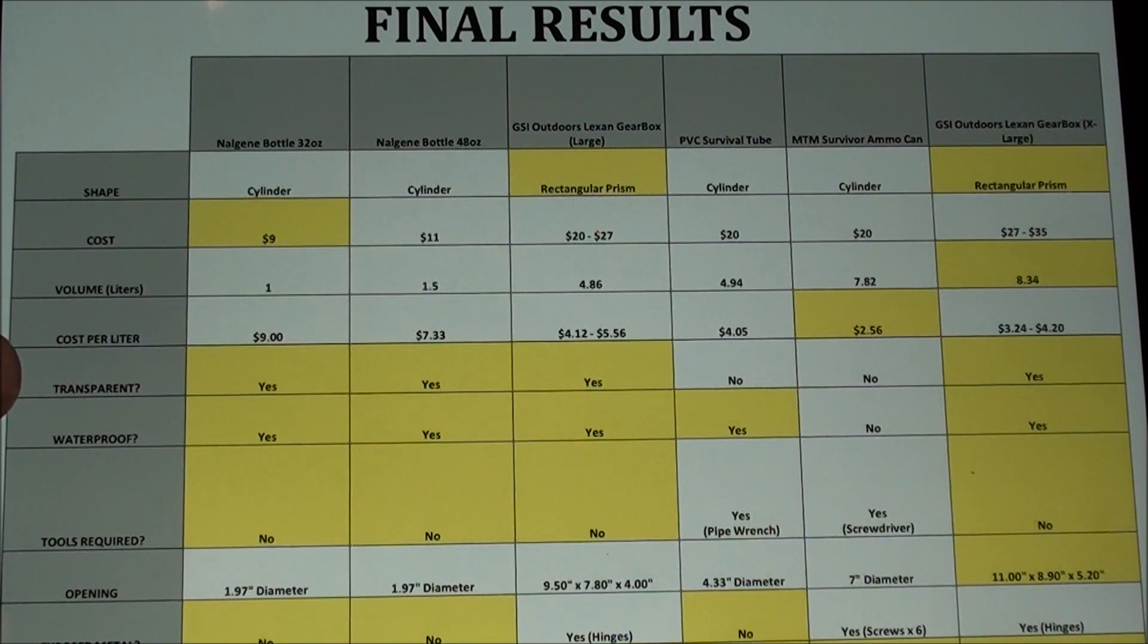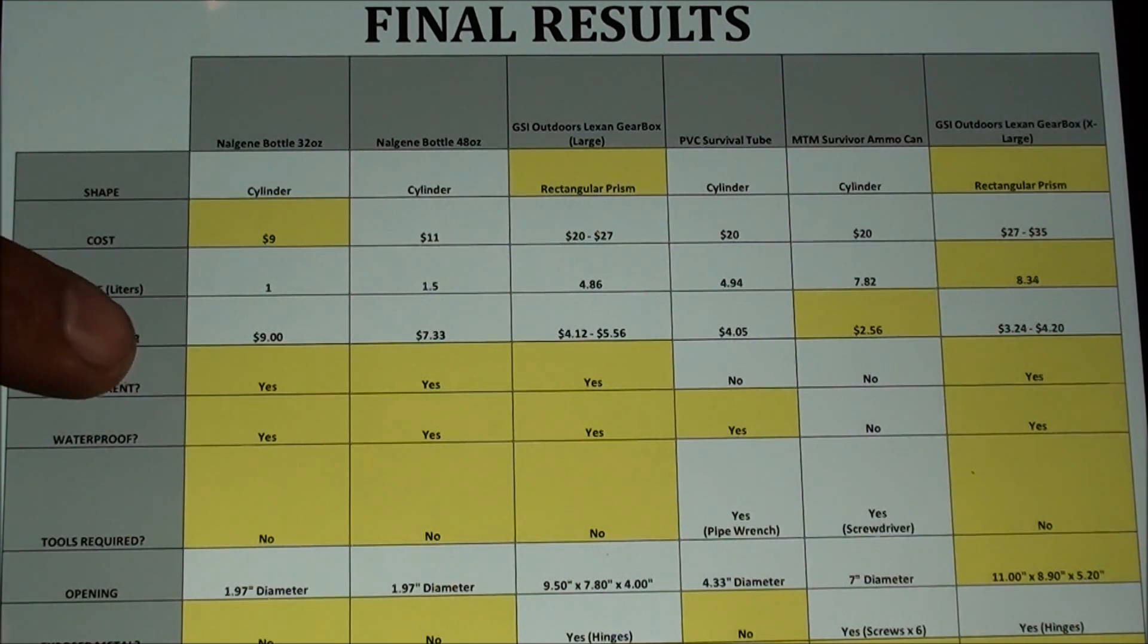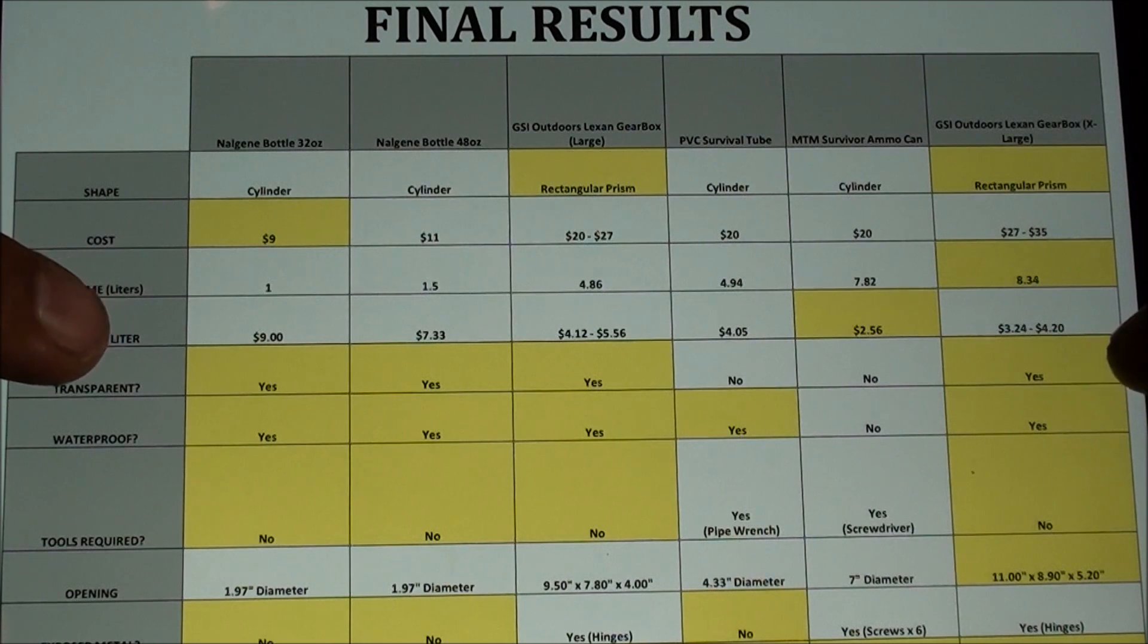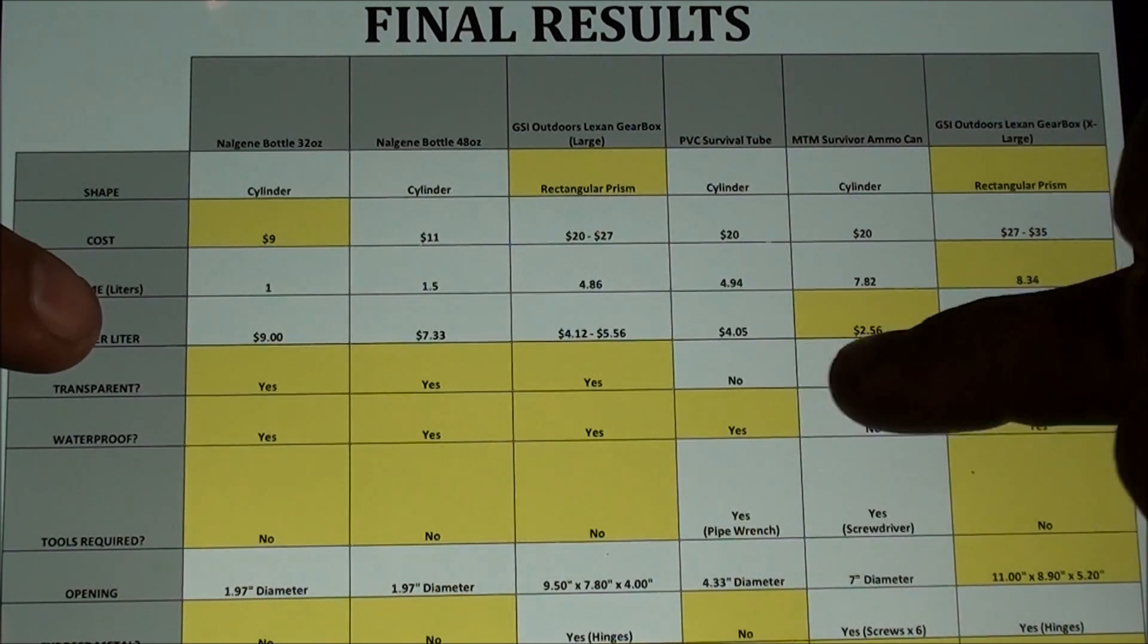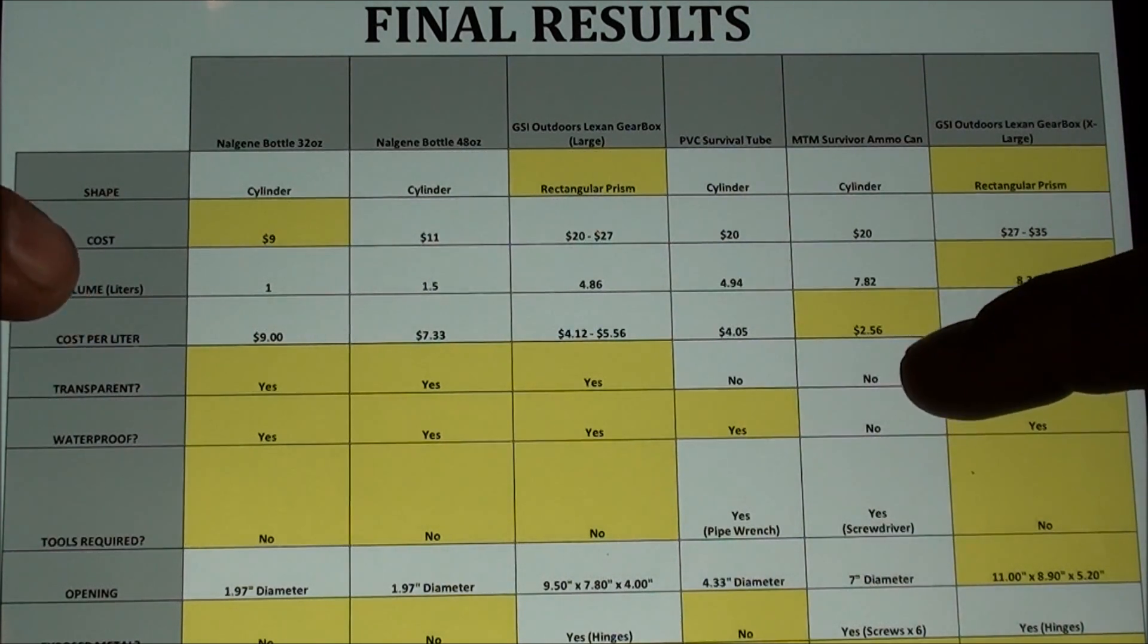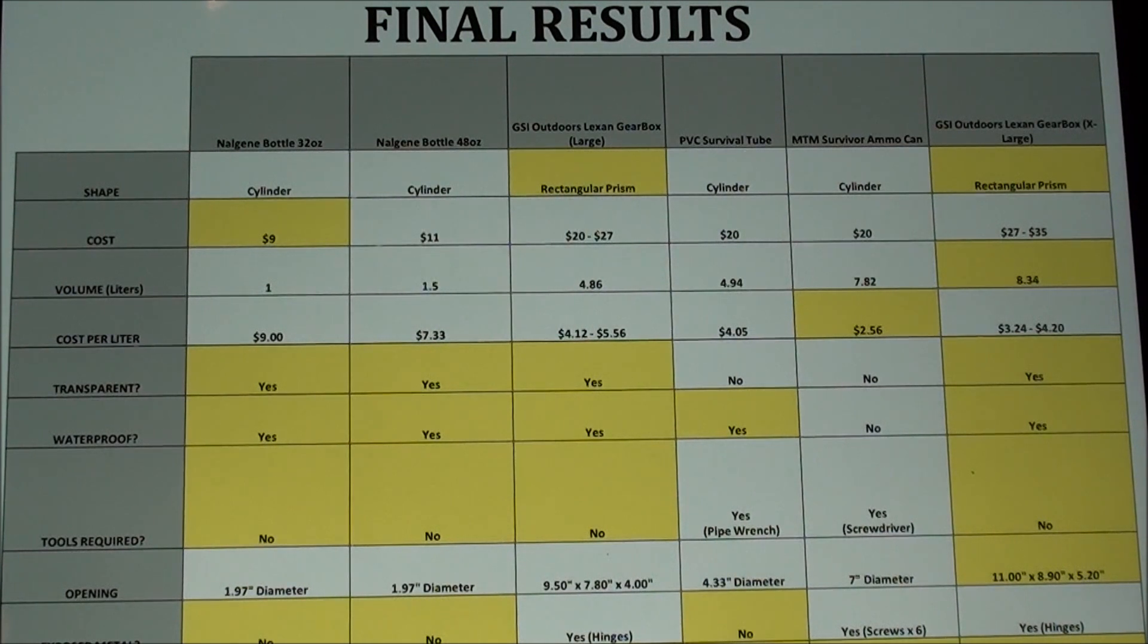The next category is transparency. I find that having a survival cache container, I think it's important to be transparent because if anyone were to happen to find it and not know what the items were inside of it, you could have some potential legal problems with regard to that. So the Nalgene water bottles and the GSI gearboxes are all transparent. The PVC survival tube and the survivor ammo can are opaque so you have no idea what the contents are inside of it and that could be a potential problem.